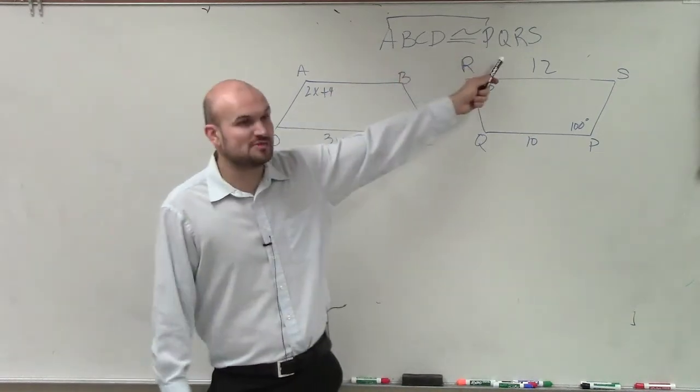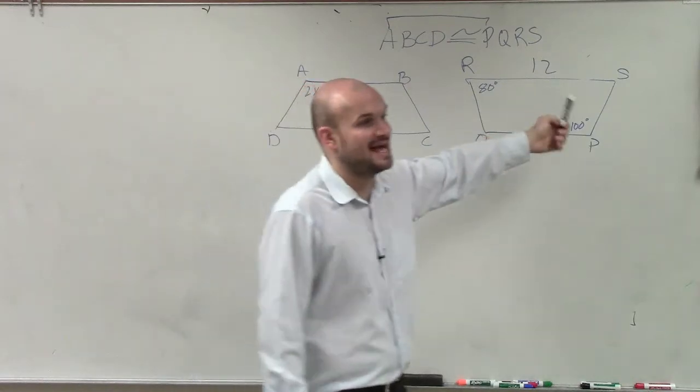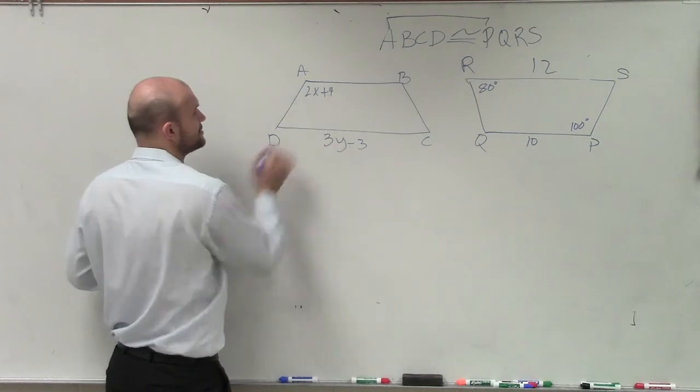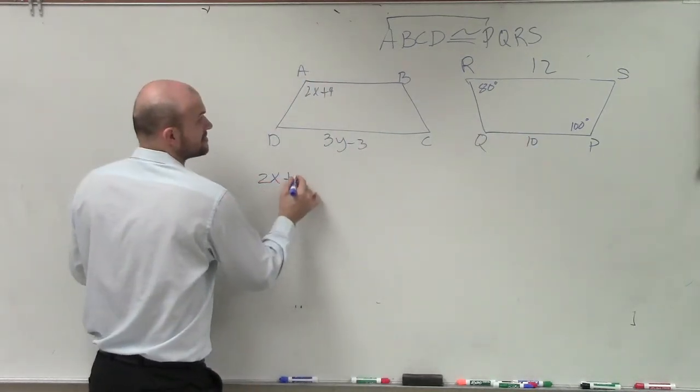So therefore, A corresponds to P. Well, since they're congruent triangles, we know our corresponding angles are equal in measure. So if A is equal to P, I know that A is 2x plus 4, and P is 100. So I can write 2x plus 4.